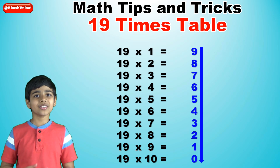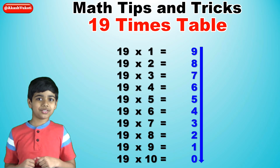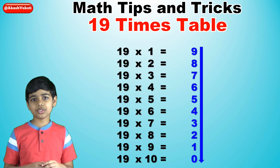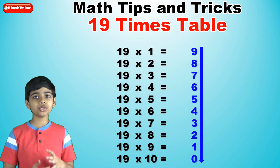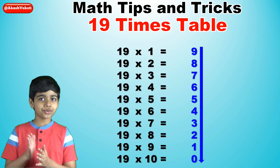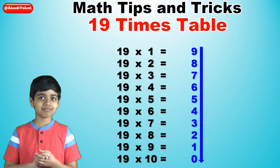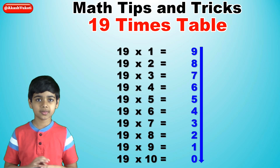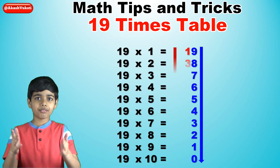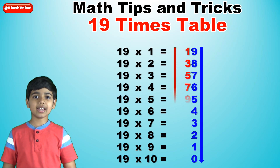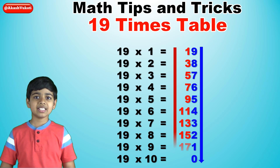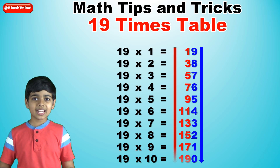Now for the tens digits, all we have to do is write all the odd numbers from 1 through 19 in ascending order. So that means 1, 3, 5, 7, 9, 11, 13, 15, 17, and 19.